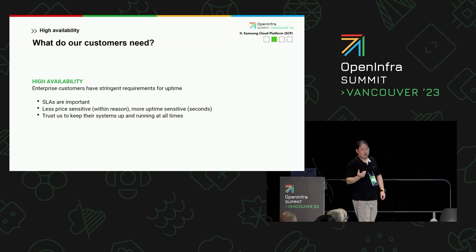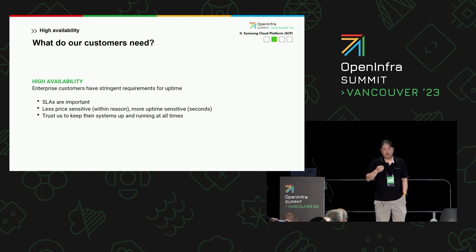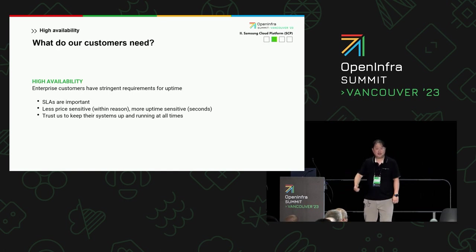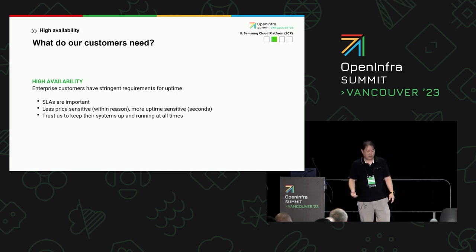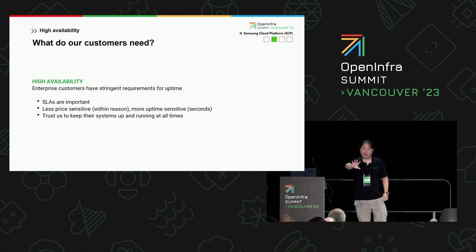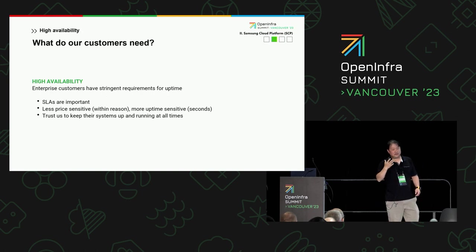What do our customers need when it comes to building high availability? For our customers, the most important thing is SLA. They want to make sure the workloads are up and running — the Samsung Electronics teams, semiconductor teams, all the non-Samsung enterprises. They're really asking: is our application going to stay up and running? How we do that is up to Samsung SDS. For us, that means we need to support zonal failures — like if a zone were to go out because of a fire. We did have a fire roughly 10 years ago in one of our data centers, where people were manually moving and trying to salvage servers.